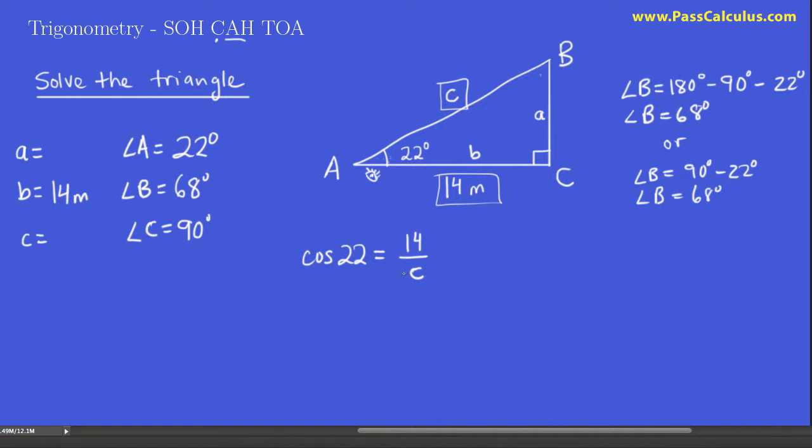Now, so cos 22, why don't we just evaluate that and see what it is. And I think that's 0.927 equals 14 over c. You can put that over 1. And c is going to be 14 times 1 divided by 0.927. I could go a little slower if you like, just cross multiplying here. This times this would be 0.927c equals 14 times 1, which is 14. Divide both sides by 0.927.